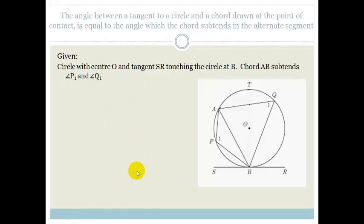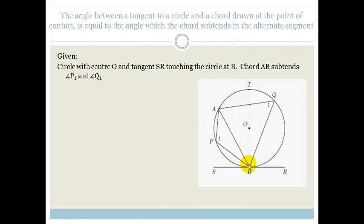Let's look at the next theorem. It says: the angle between the tangent and the chord drawn to the point of contact is equal to the angle which the chord subtends in the alternate segment. This is actually called the Tan-Chord Theorem. We're given a circle with centre O, tangent SR touching the circle at B, and chord AB, with angles P1 and Q1.